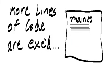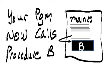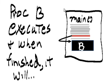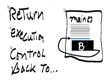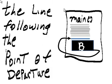More lines of code are executed. Your program now calls Procedure B. Procedure B executes and when finished, it will return execution control back to the line following the point of departure.